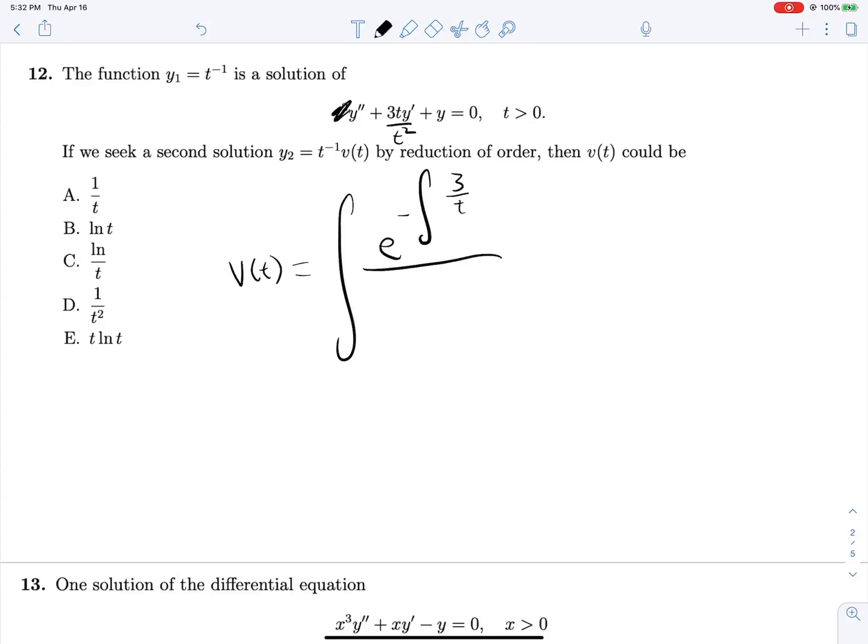That's 3 over t dt, and everything will be divided by y1 squared. So t to the negative 2. And we can take this t to the negative 2 and move it up top, t to the negative 2, and evaluate this integral. This will be 3 ln t, well sorry, negative 3 ln t.